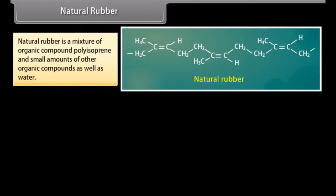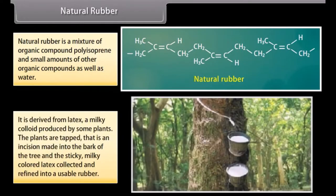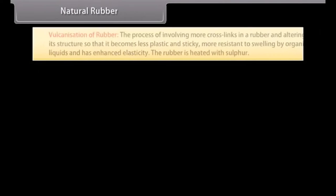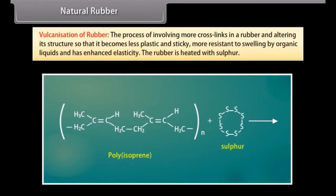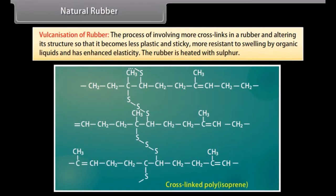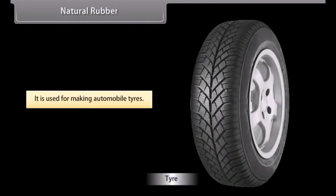Natural rubber is a mixture of the organic compound polyisoprene and small amounts of other organic compounds as well as water. It is derived from latex, a milky colloid produced by some plants; the plants are tapped by making an incision in the bark of the tree, and the sticky milky latex is collected and refined. Vulcanization of rubber involves introducing more cross-links into rubber to make it less plastic and sticky, more resistant to swelling by organic liquids, and with enhanced elasticity; the rubber is heated with sulphur and is used for making automobile tires.